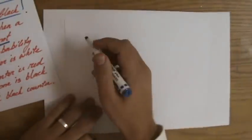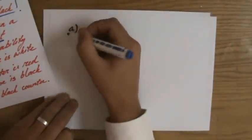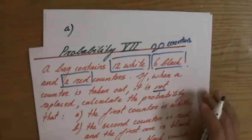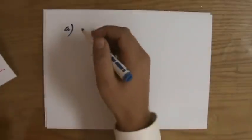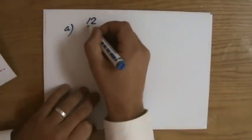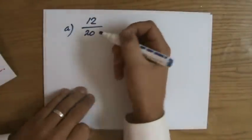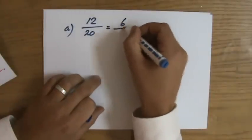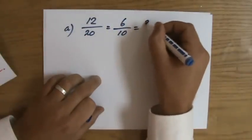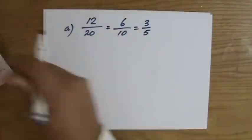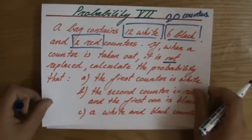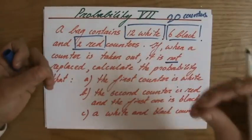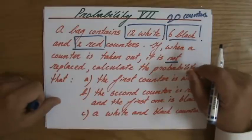That the first counter is white. Now, how many successes do you have? How many white ones do you have? You have 12 white ones out of 20 possibilities. So 12 out of 20. And that's the answer. You could simplify that if you like. You don't have to. 3 over 5, 60% chance if you like. And that is still an independent event happening. Just one thing happening. Getting a white counter out of that bag.